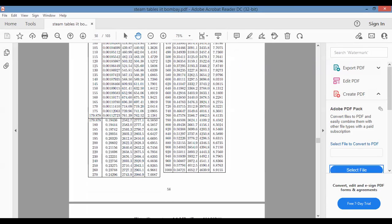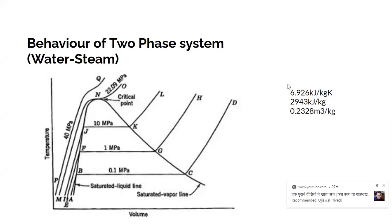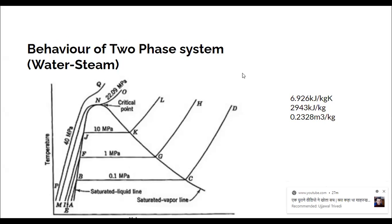Let us go back to the presentation to verify whether the values we have obtained are correct. You can see that the values from the superheated steam tables match. This is how we refer to the superheated steam tables to find specific enthalpy, specific entropy, and specific volume. It is straightforward — just refer to the superheated steam tables at the corresponding pressure and temperature.